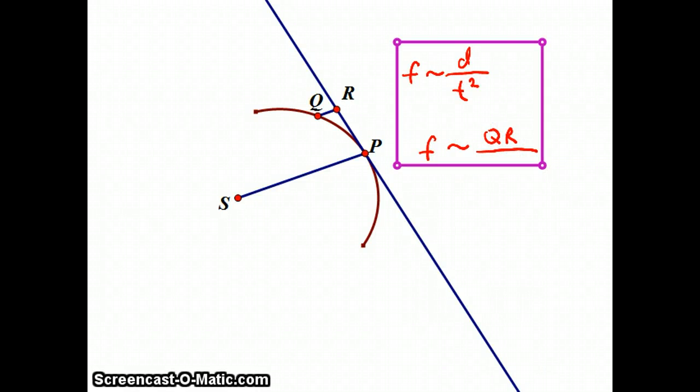Now, as far as the amounts of time, it's been established already because of the equal areas and equal times law from Kepler, which was proved in part two of this lecture. Here, the time is proportional to the area that this planet sweeps out as it goes from P to Q. Well, I'll draw in line QS here.